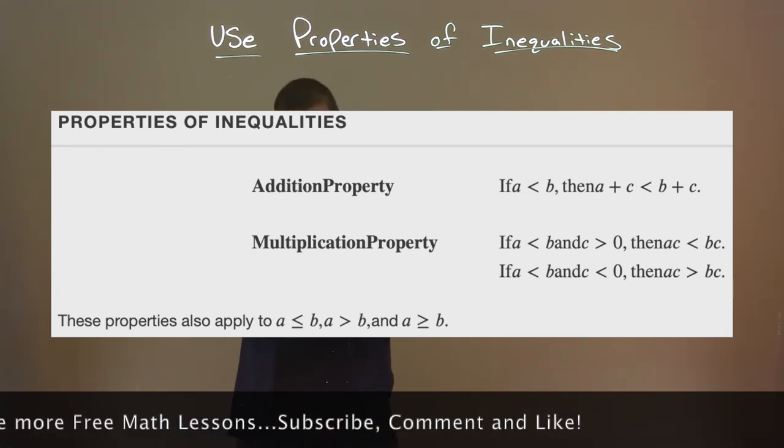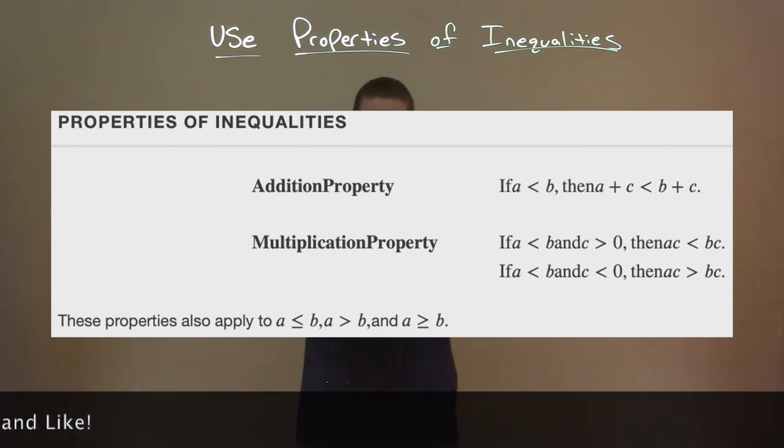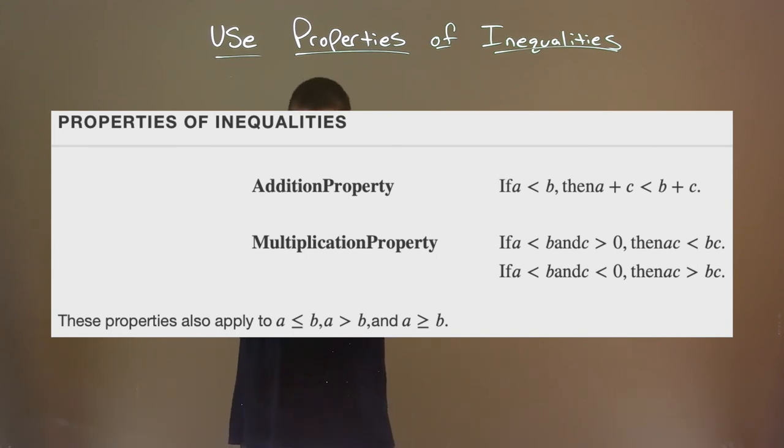And then we also have the multiplication property: if A is less than B and C is greater than 0, then A times C is less than B times C. If A is less than B and C is less than 0, then A times C is greater than B times C.